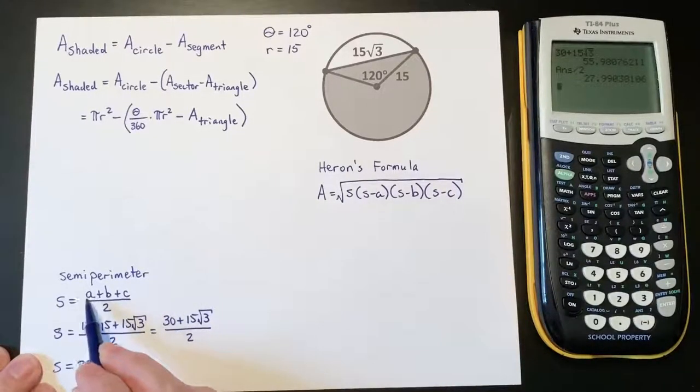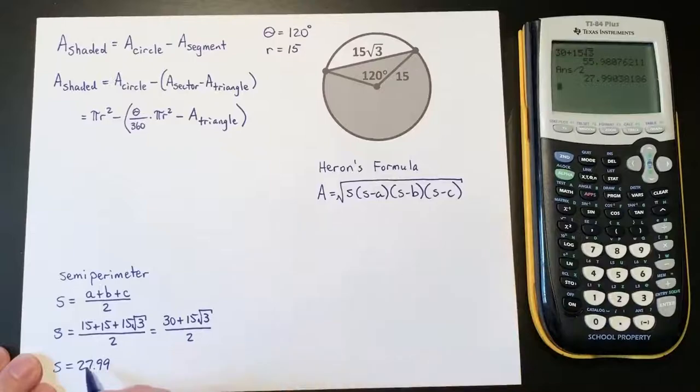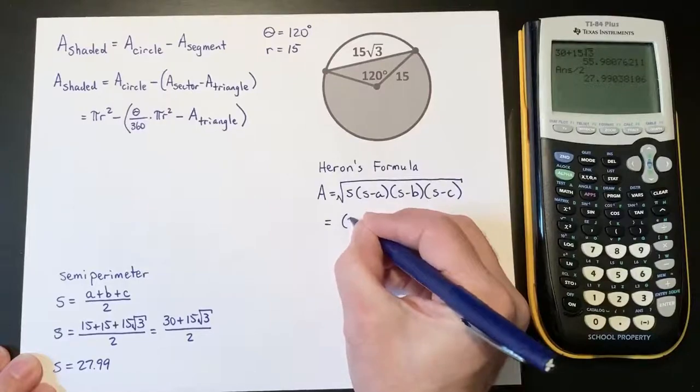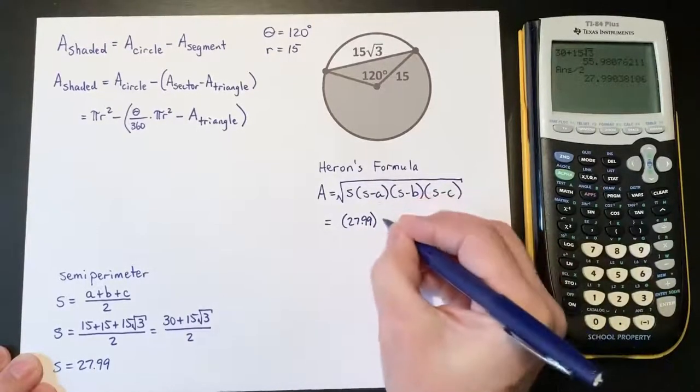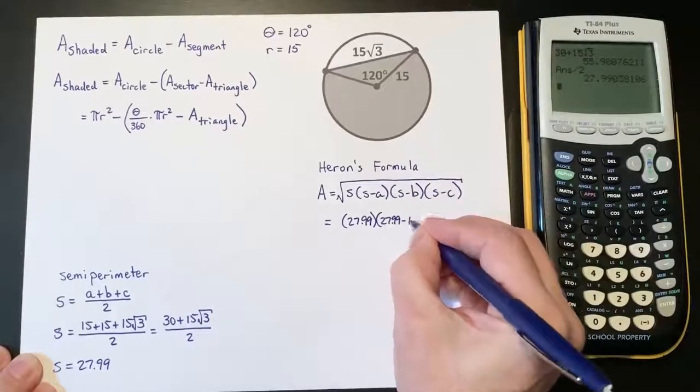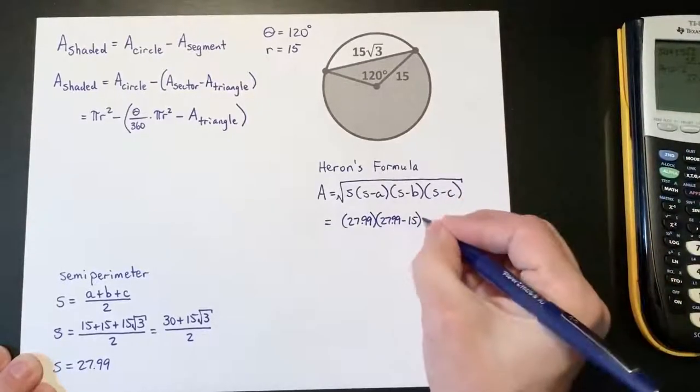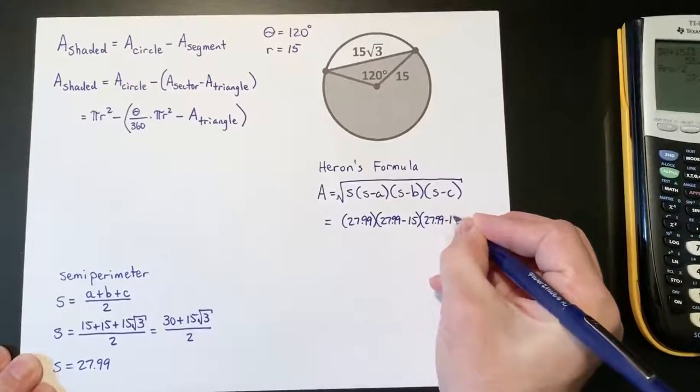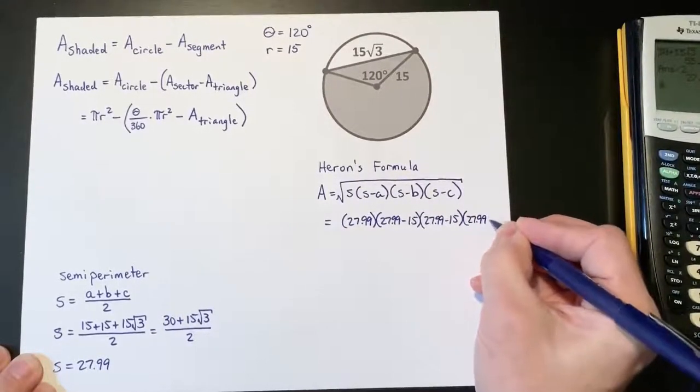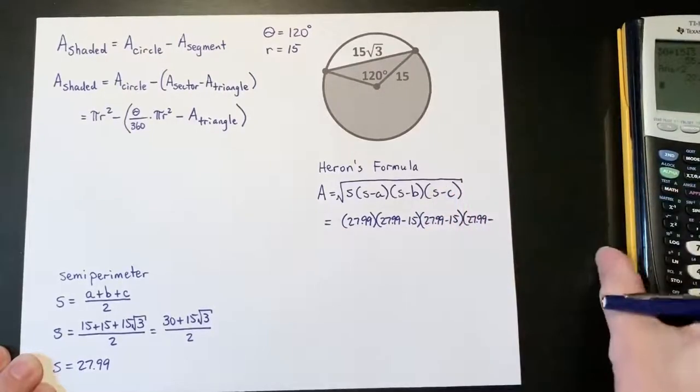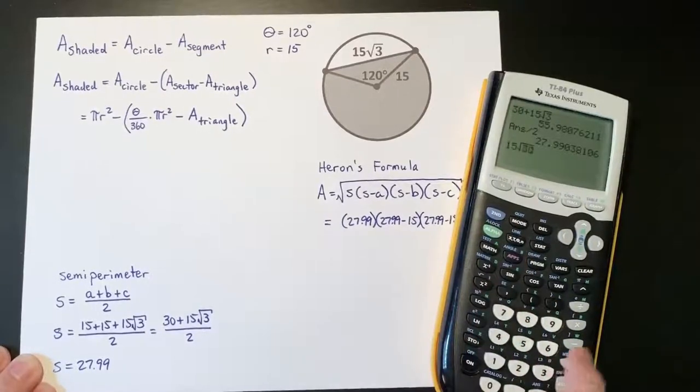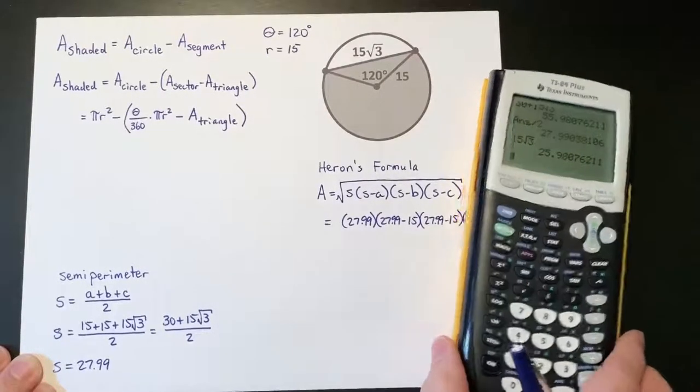Now in the formula, again, a, b, and c are the three sides. So if we use this s value and we come back over here to Heron's formula, we get s times (s-a) times (s-b) times (s-c), which is 27.99 times (27.99-15) times (27.99-15) times (27.99-15√3). Well, 15√3 is 25.98.